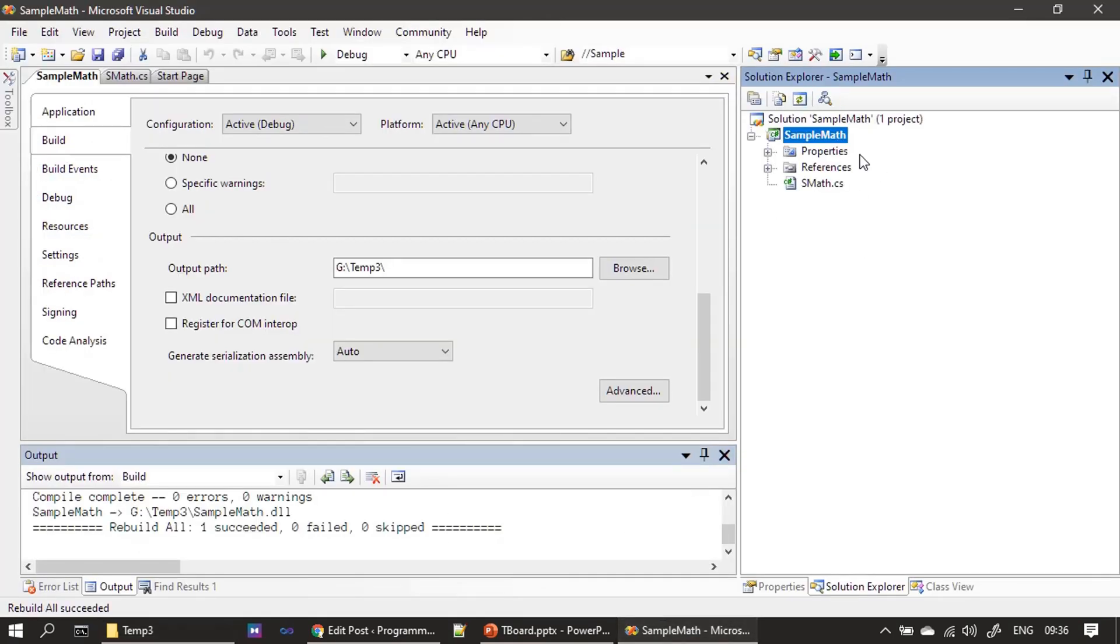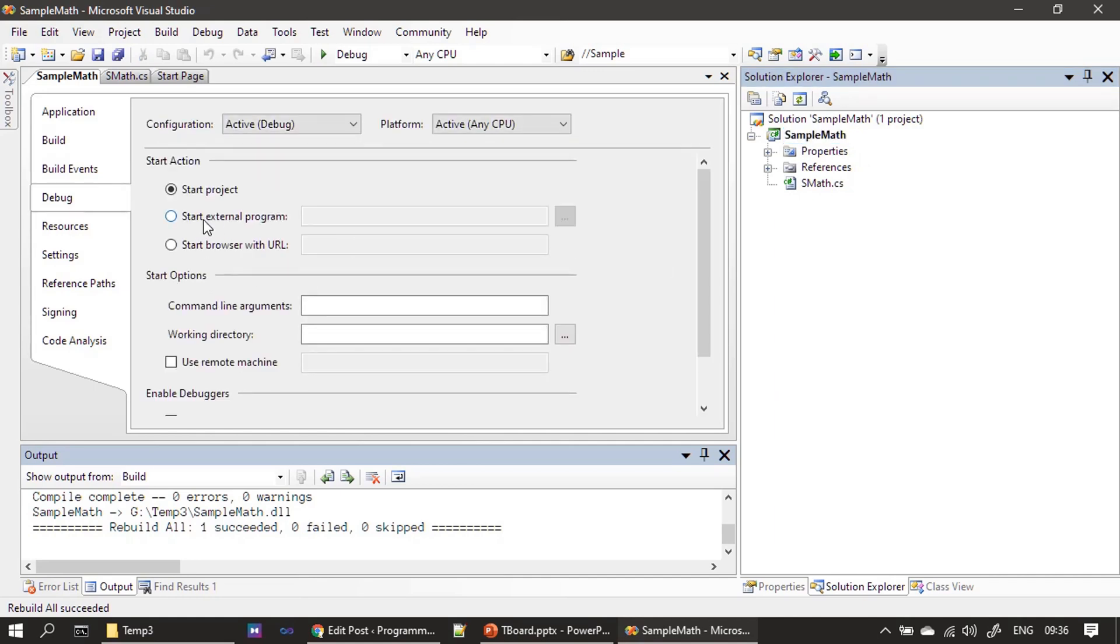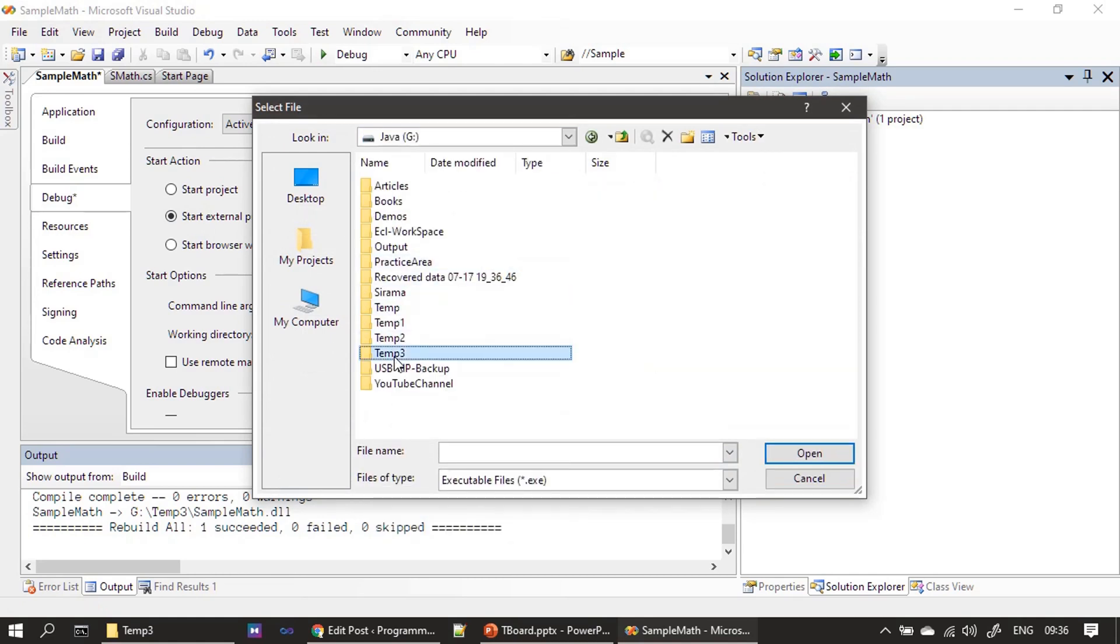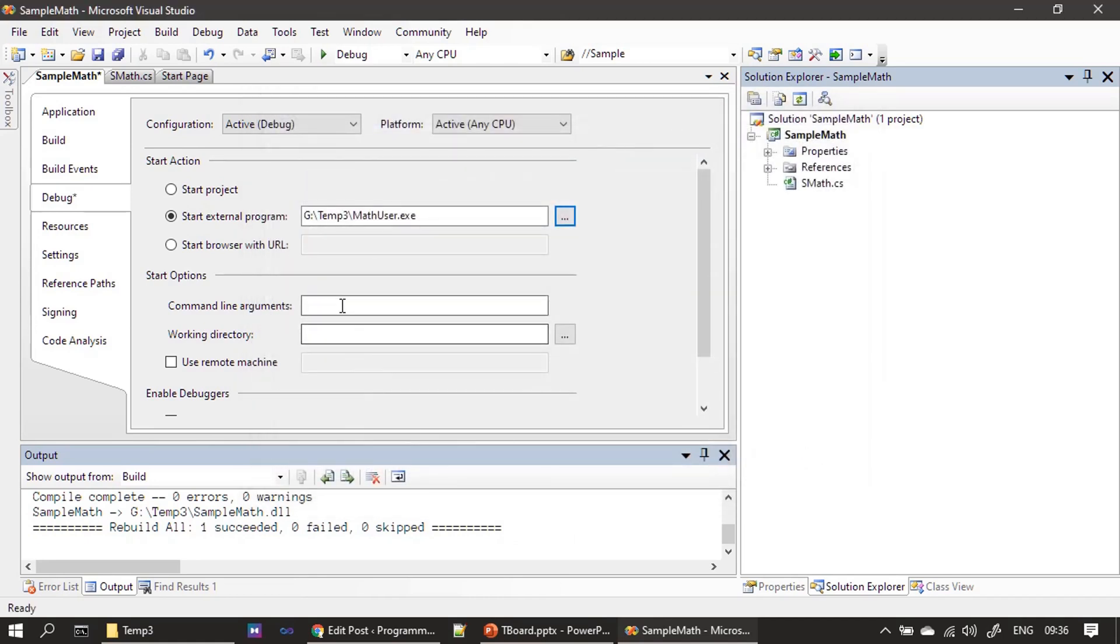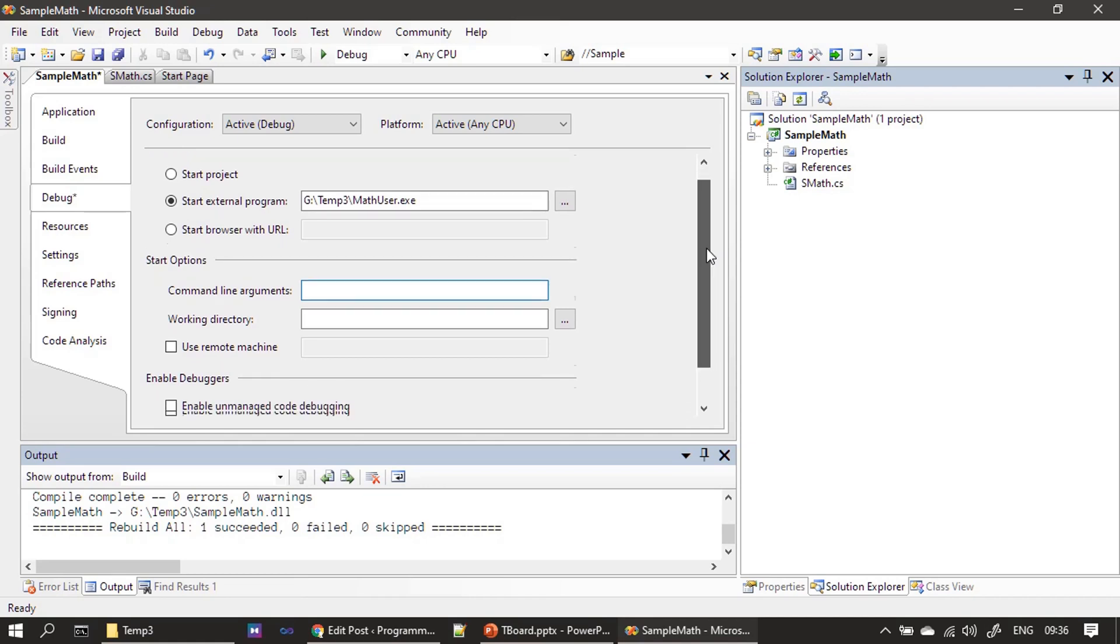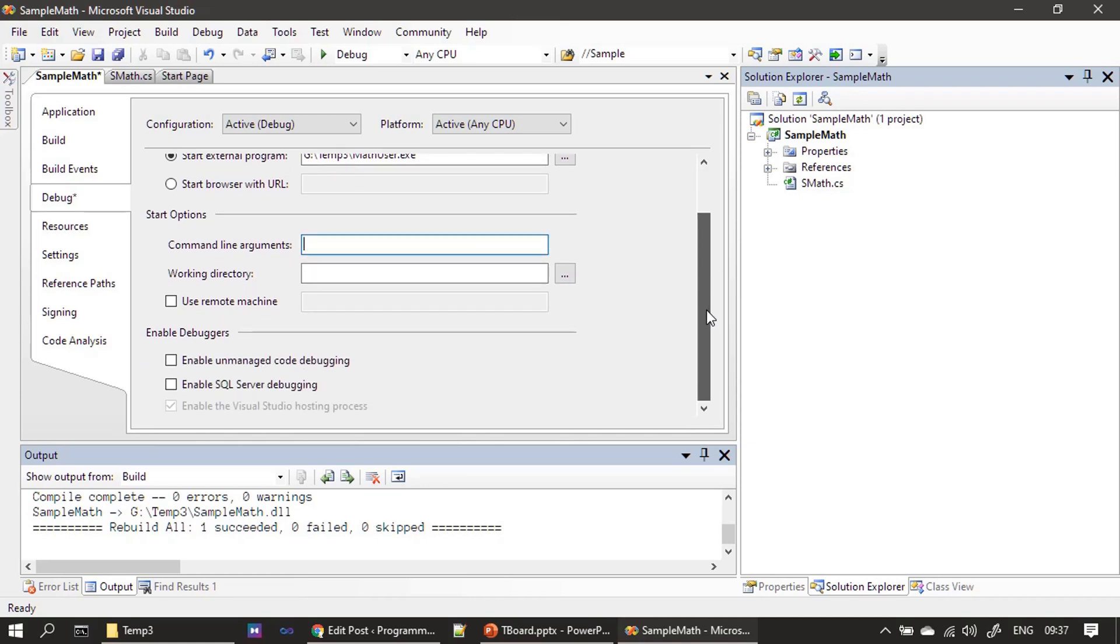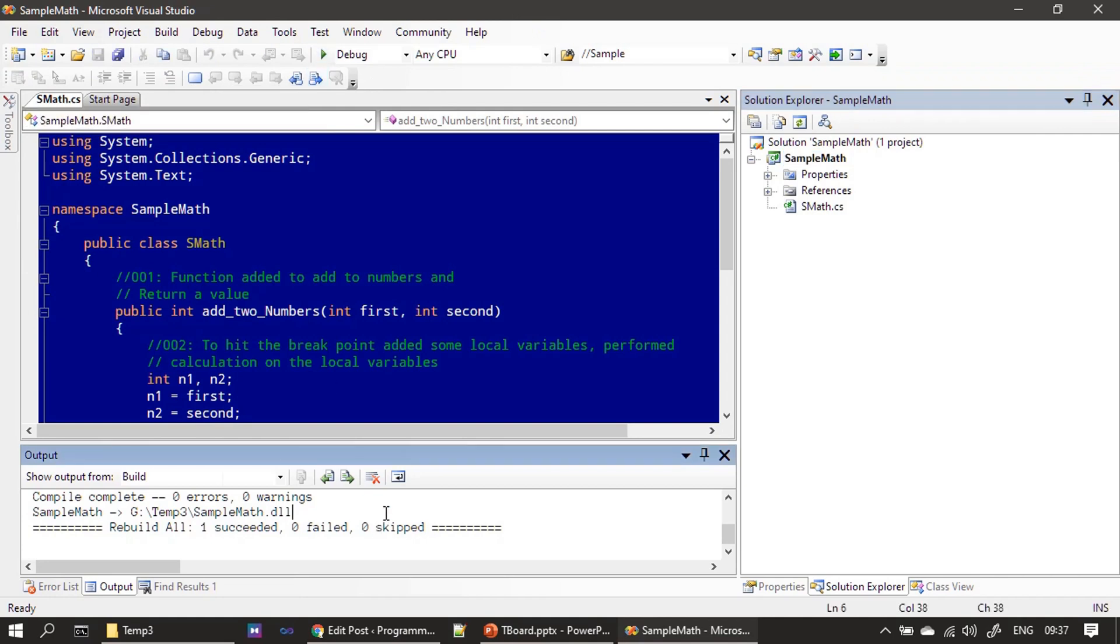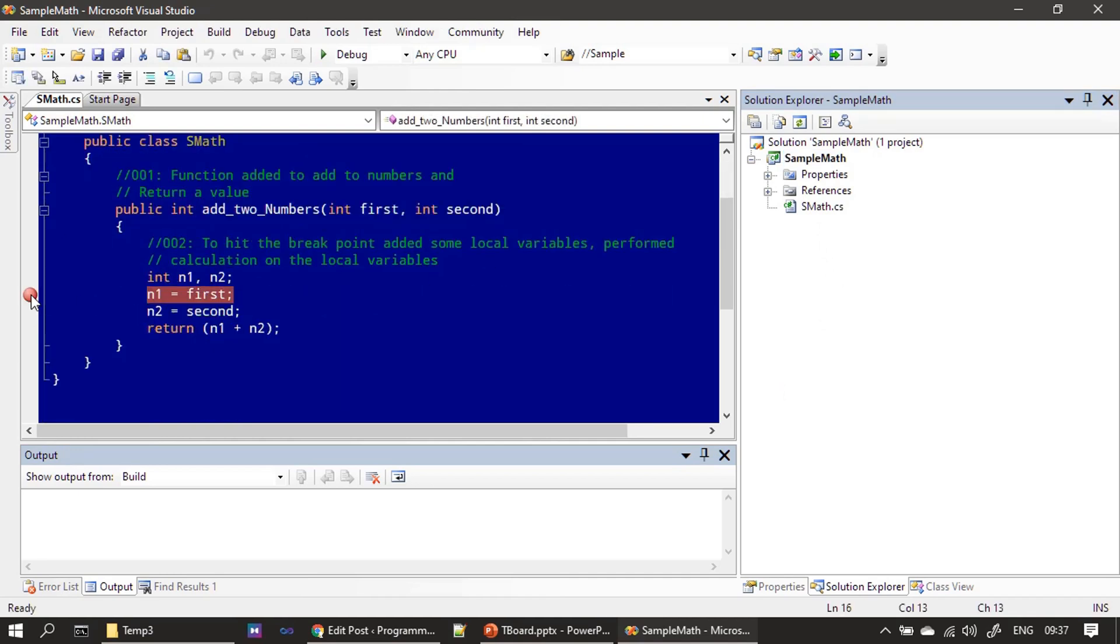MathUser is the concern. Let me copy this. And if you see here, we don't have the source code for MathUser. Now I'm going to Debug, Start External Program, which is in G temp three and MathUser.exe. I don't have any command line parameter. If MathUser is accepting a command line parameter, you can specify that here as part of this command line argument. Now I'm saving this. So now I can run this DLL. Here before that, let's go to the case map and we will put a breakpoint here at add two numbers. We know that MathUser is calling this add two numbers.